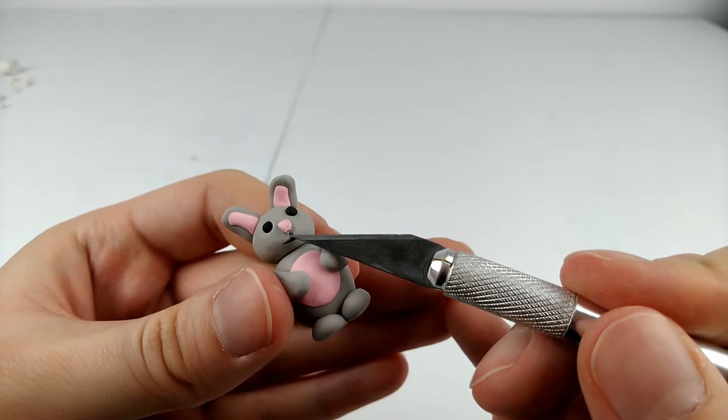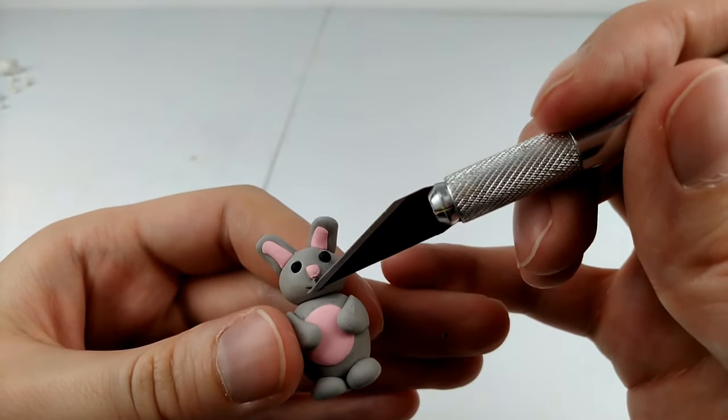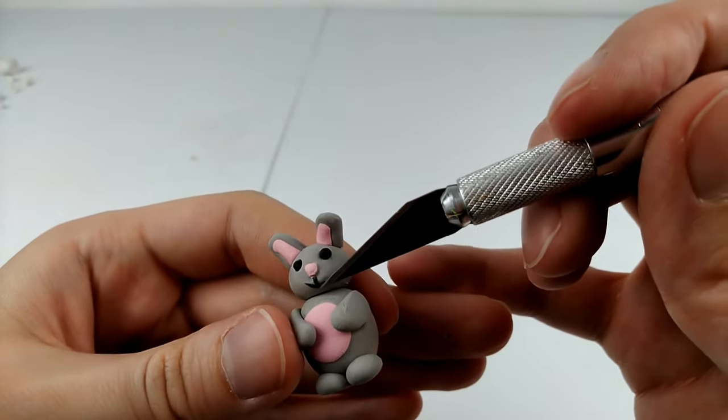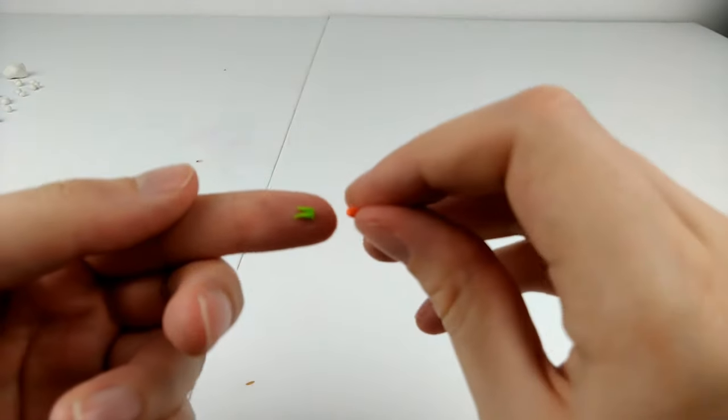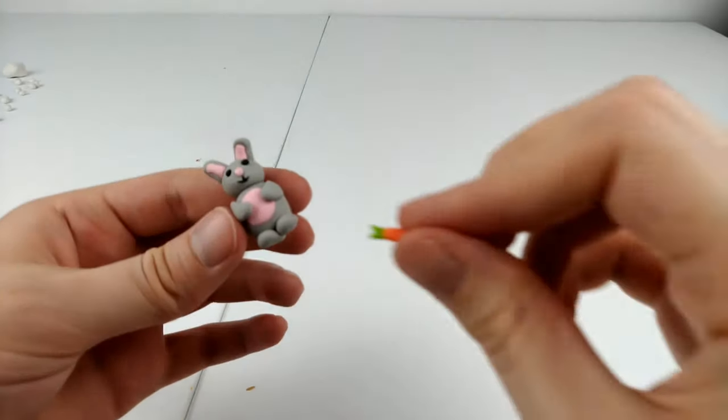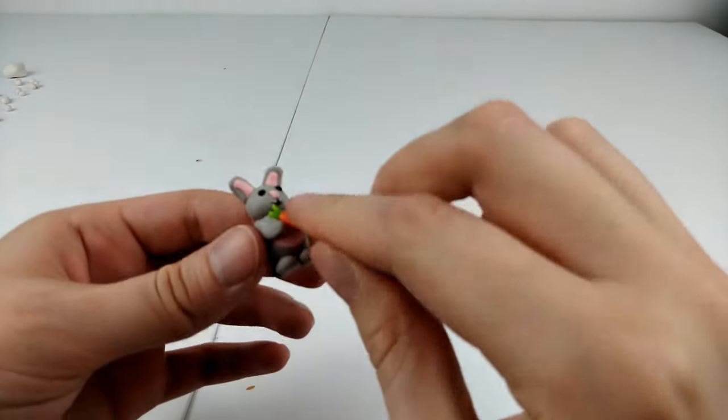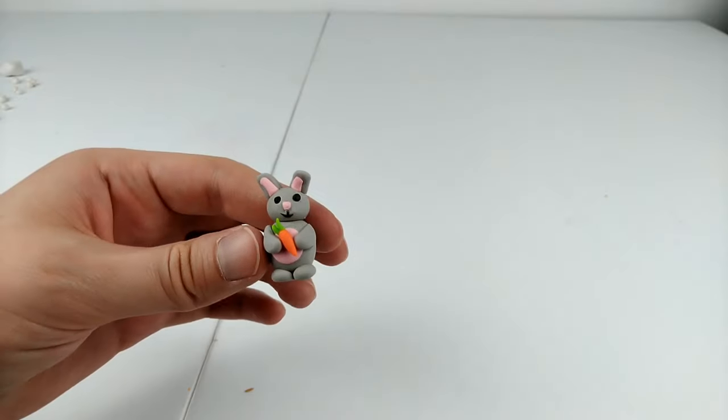This part was pretty tricky but I find it easier rolling it on a piece of paper as it adds more friction and it doesn't stick so easily. And the bunny's arms just looked empty so I thought I'd add in a carrot too. And after baking our little bunny is complete.